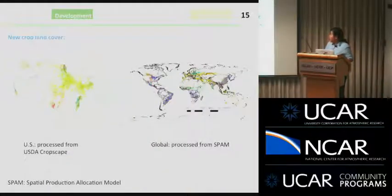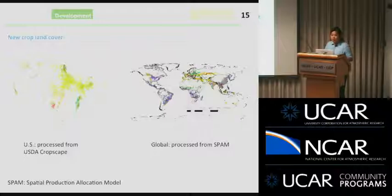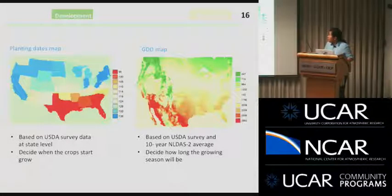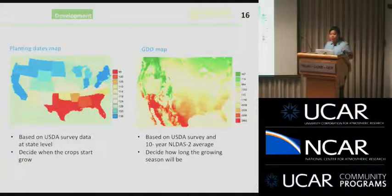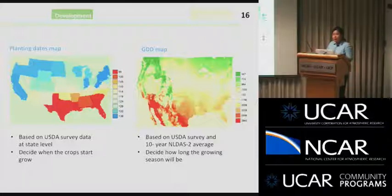For the new land cover map for the U.S., we use the USDA CropScape, which combines survey data and remote sensing data. For a global map, we use the SPAM data, a combination of model results and survey data from different global organizations. For planting dates, we use USDA survey data at the state level. Planting dates vary from around day 95 to day 130 — more than a month's difference. We also calculate growing degree maps based on survey growing season lengths to inform which cultivar of corn to select for different regions.